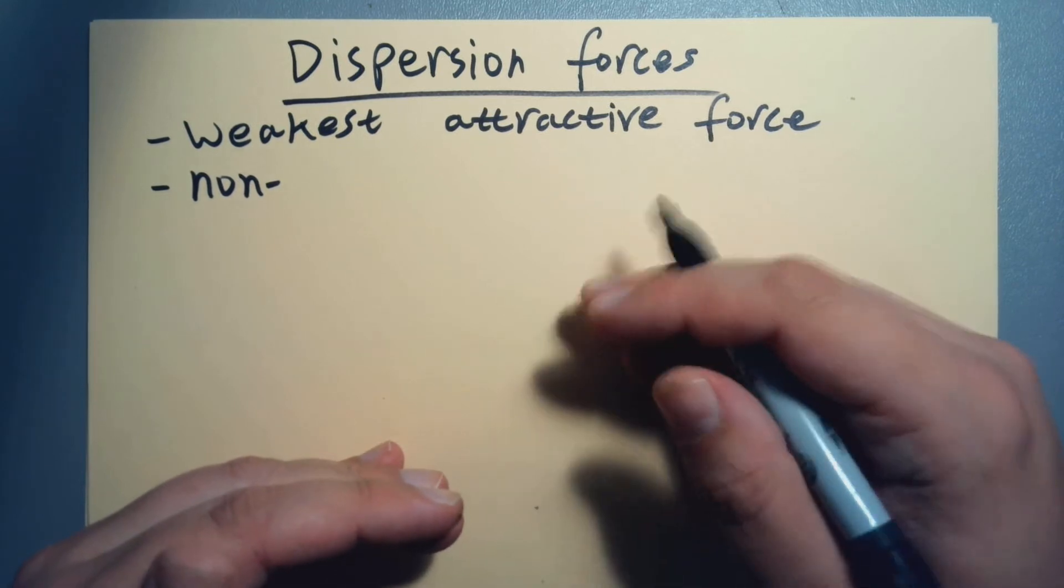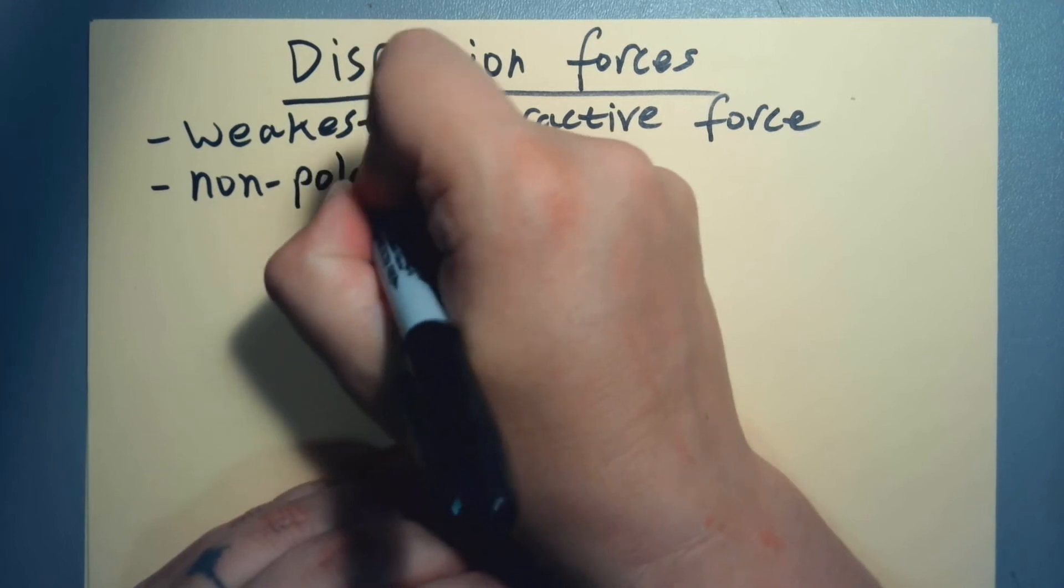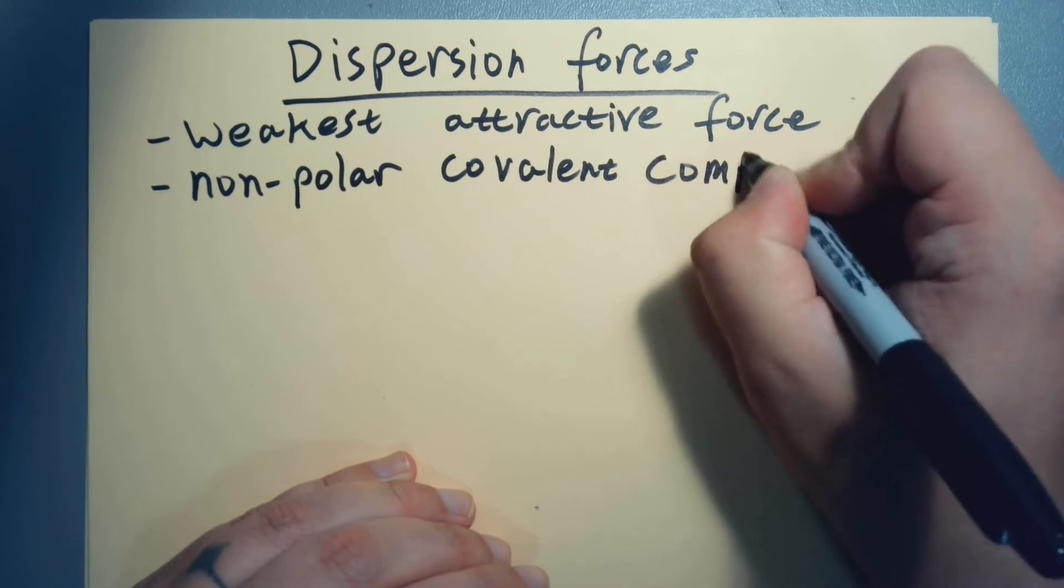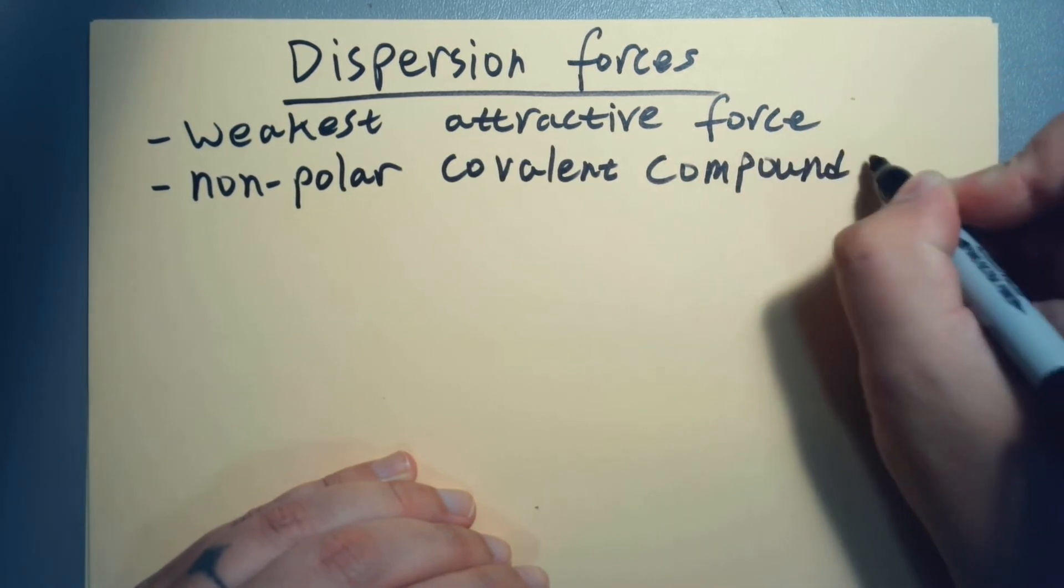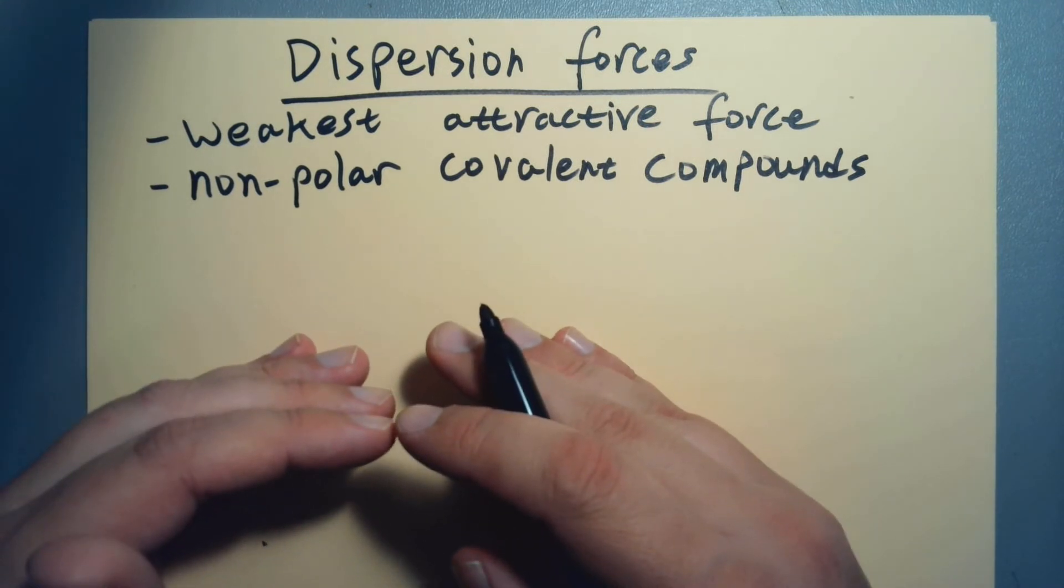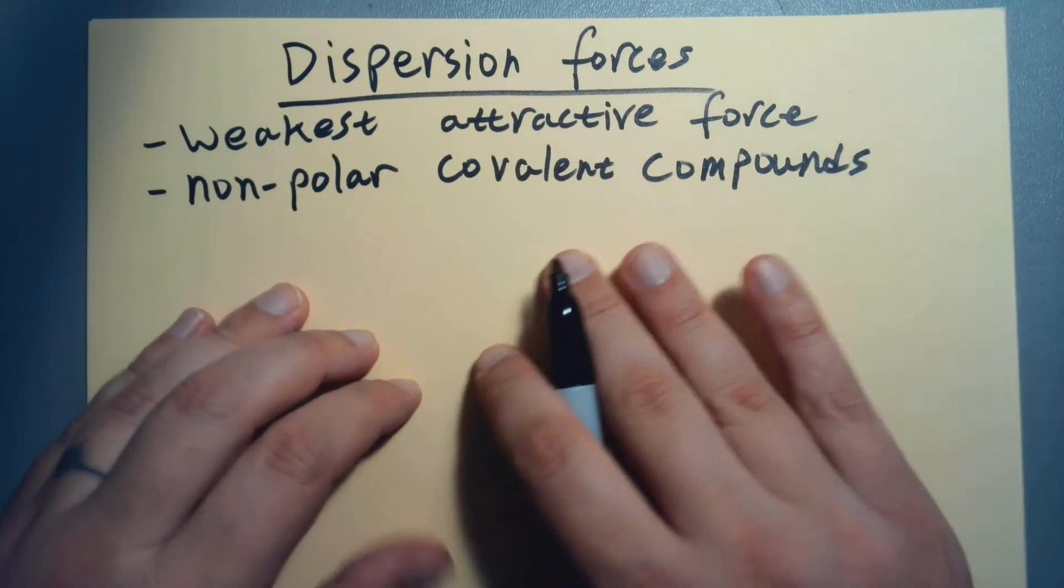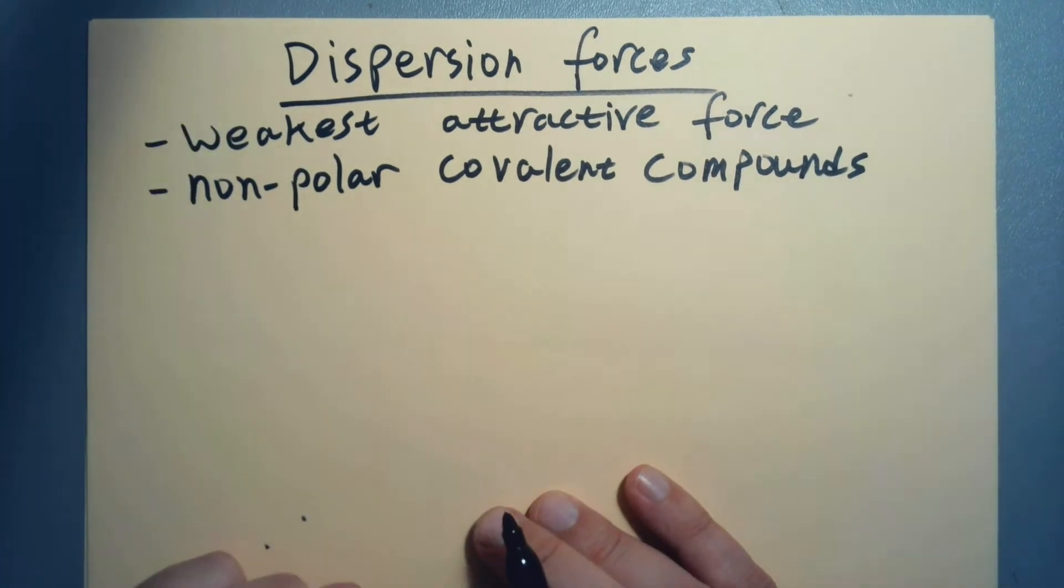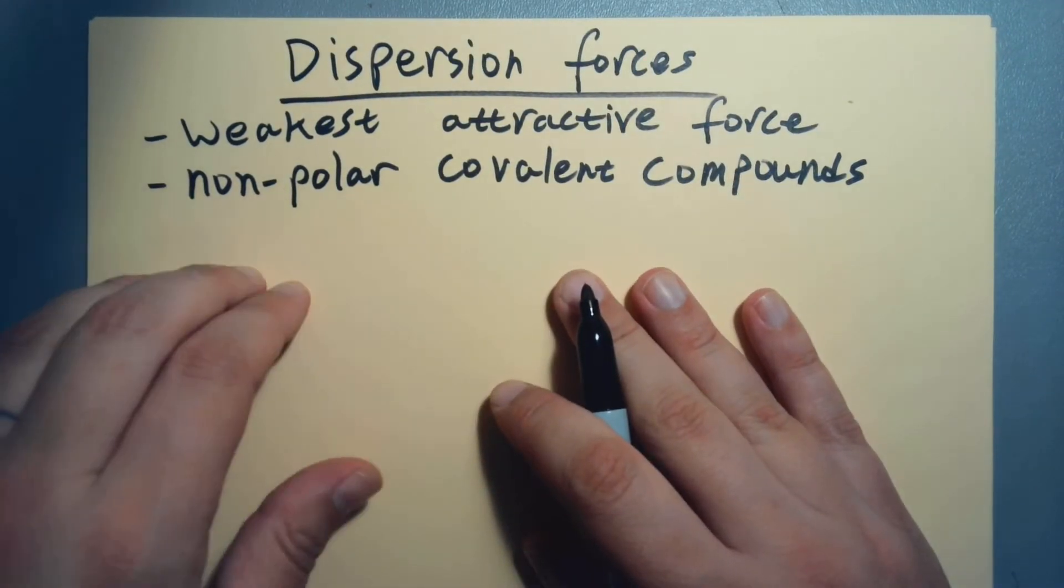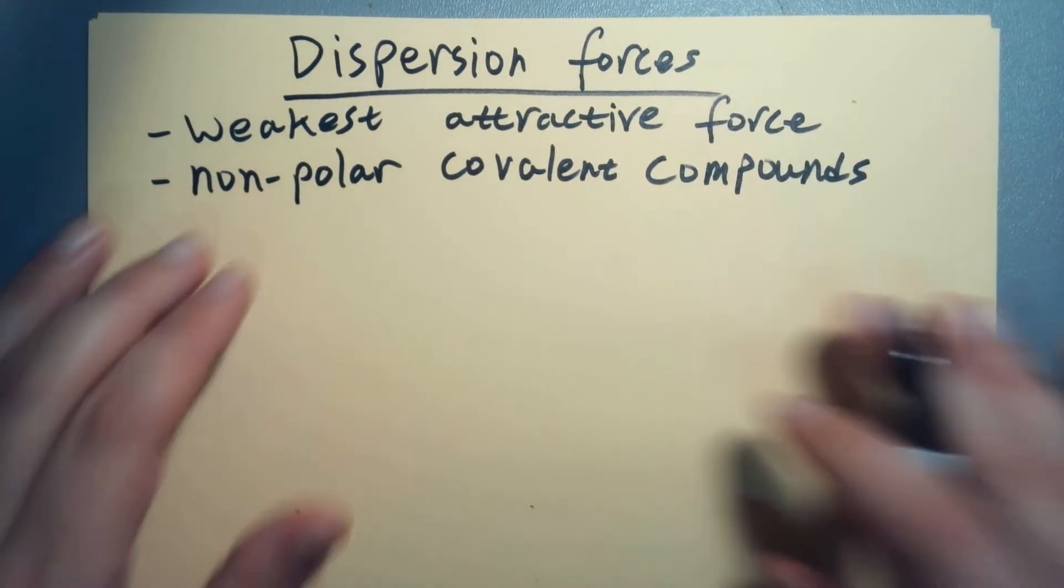So maybe the one you worry about in non-polar covalent compounds. If you have an ionic compound, ion-ion attractive forces are going to be way stronger than dispersion forces—magnitudes stronger. If you have a polar covalent compound, that means it's either going to be able to hydrogen bond or at the very least have dipole-dipole interactions. Those are going to be stronger than dispersion forces.